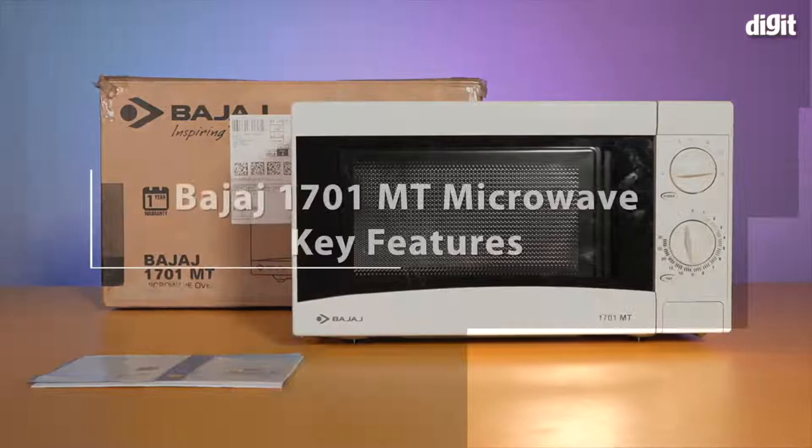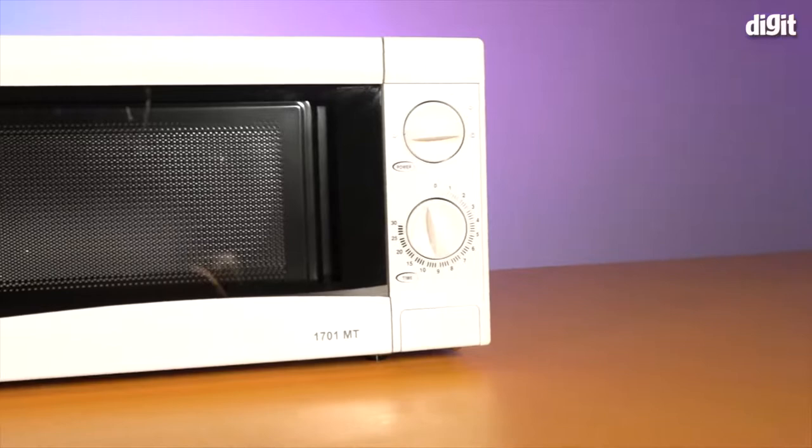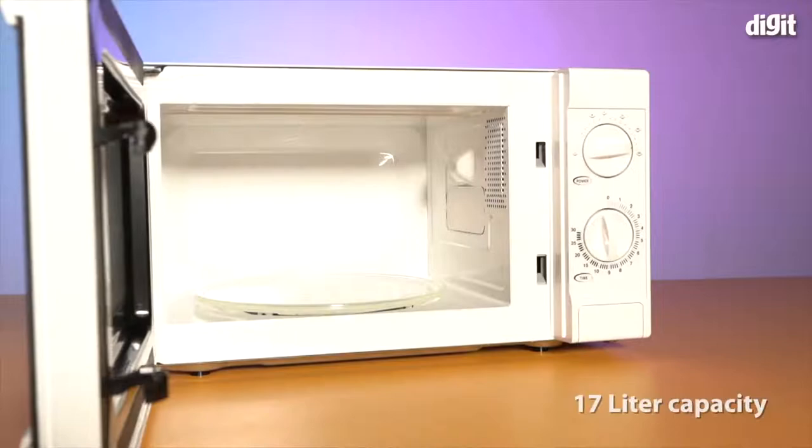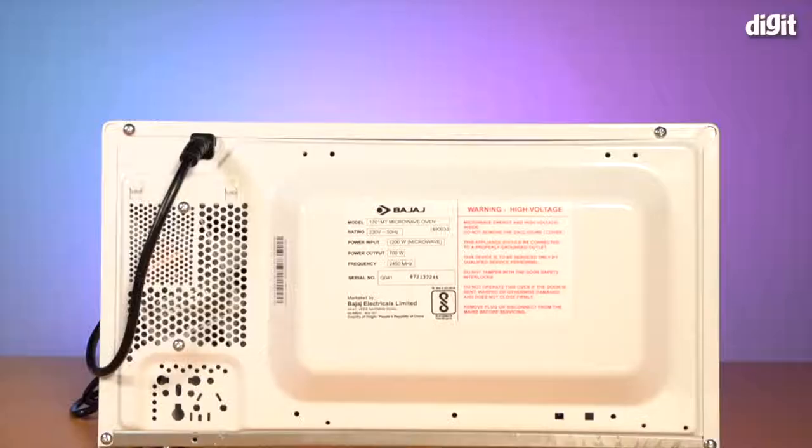Hello and welcome to Digit. In this video, I'm going to tell you some of the key features of the Bajaj 1701 MT microwave oven. Firstly, this microwave oven has 17 liters of capacity and it's compact to fit anywhere in your kitchen.